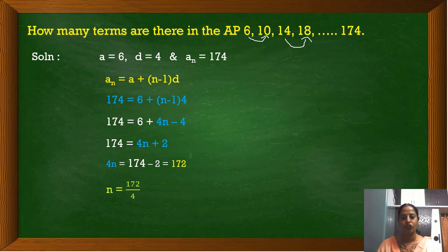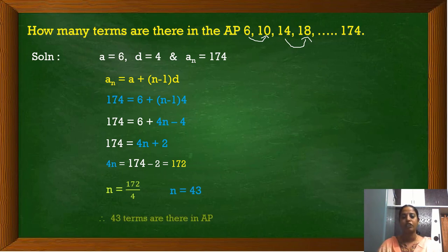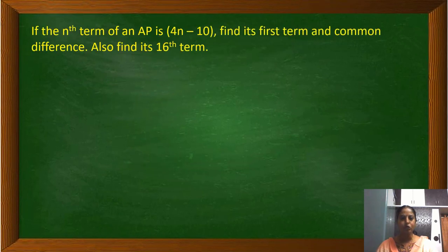When we divide 172 by 4: 4 × 43 = 172. Therefore, n = 43. That means in the given AP there are 43 terms. Let us solve one more problem to understand arithmetic progression better.